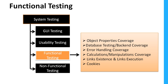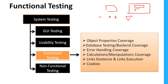Object properties coverage means any application has different kinds of objects — it can be a button, a text box, a link, a radio button, or a drop-down box. These web elements are called objects, and their properties can change dynamically at runtime. For example, on a login screen, the OK button is disabled by default until you enter both username and password — that is an example of object property changing dynamically.